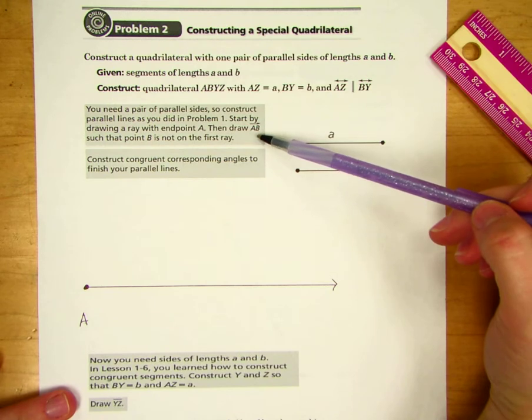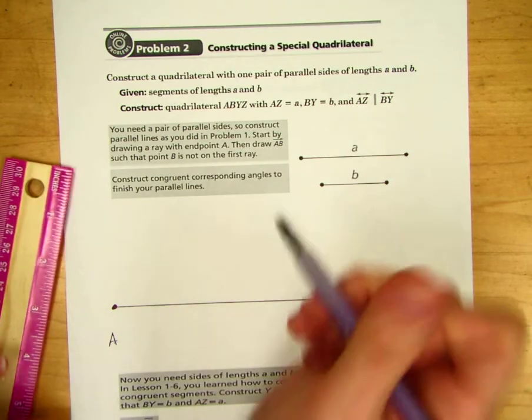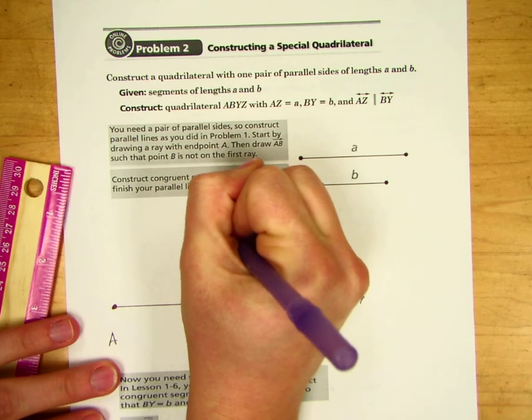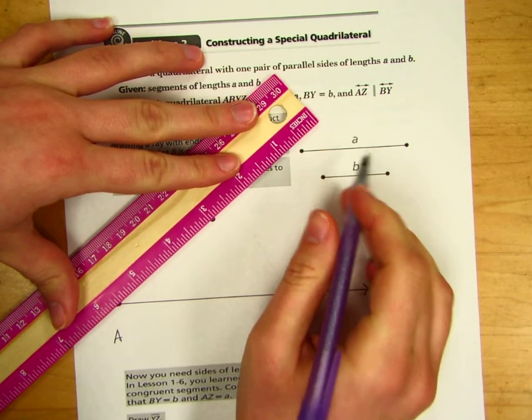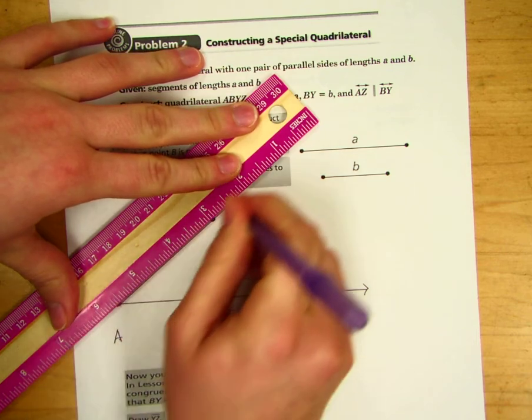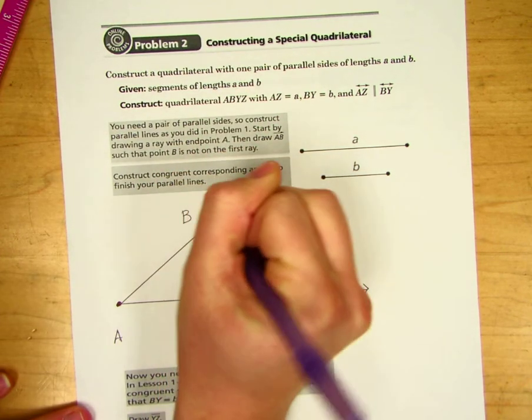Then draw AB such that point B is not on the first ray. We'll put B over here, and I'll connect these two with another ray and mark that point as B.